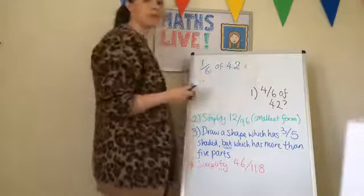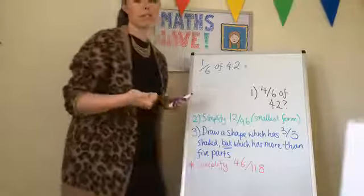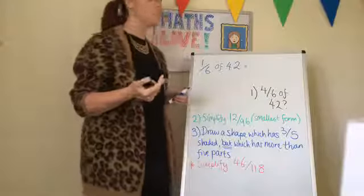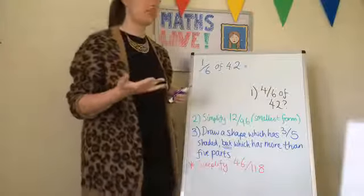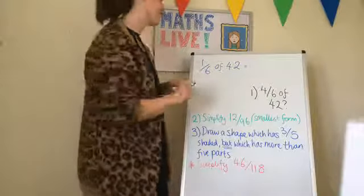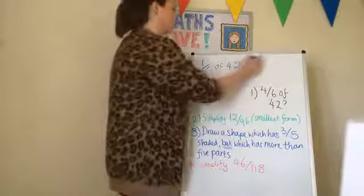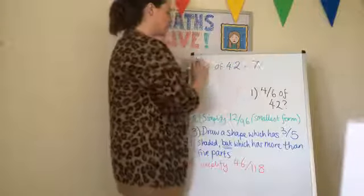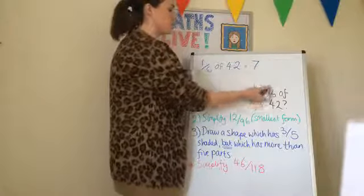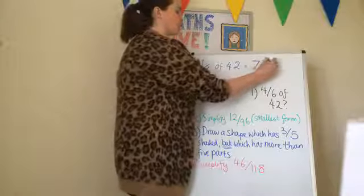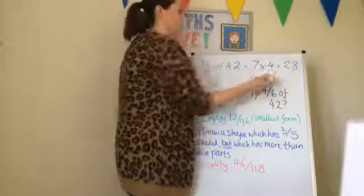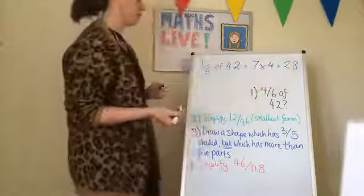Six times tables: one-sixth of 6, two-sixths of 12, three-sixths of 18, four-sixths of 24, five-sixths of 30, six-sixths of 36, seven-sixths of 42. So one-sixth of 42 is seven. But we want four-sixths. So seven times four is 28. The answer for number one is 28.